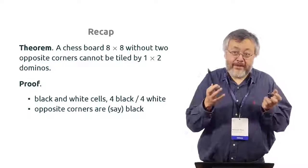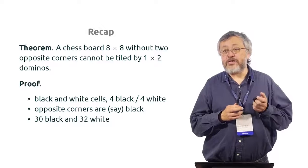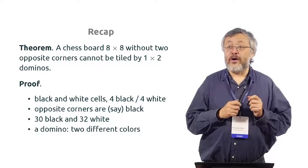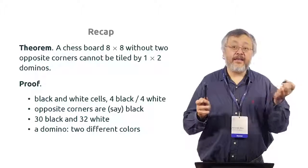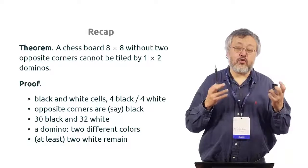Opposite corners are black. Oh, they can be also white, but let's consider the case when they are black. And then we have 30 black and 32 white cells. And these numbers are different. Each domino has two different colors, so it covers one black and one white. And there is no chance that we cover everything. At least two white should remain.